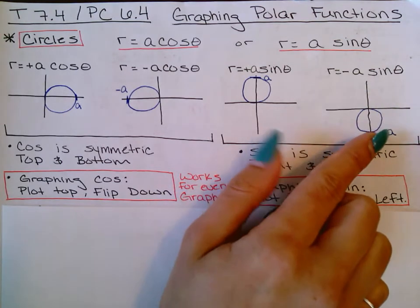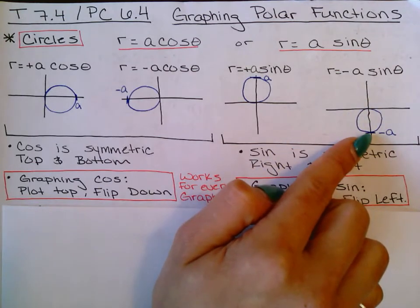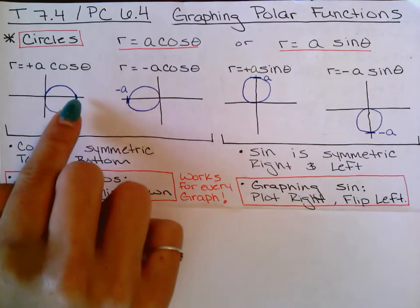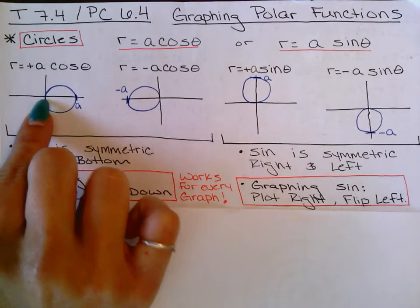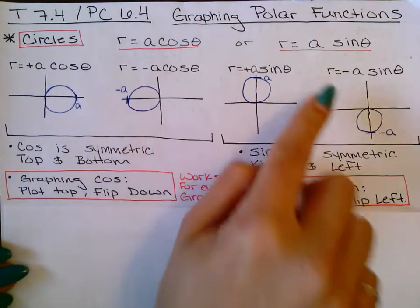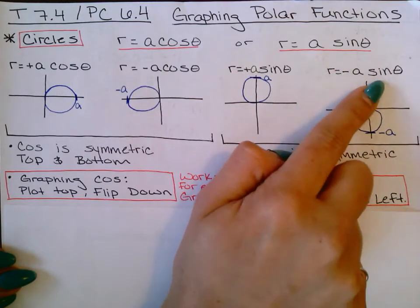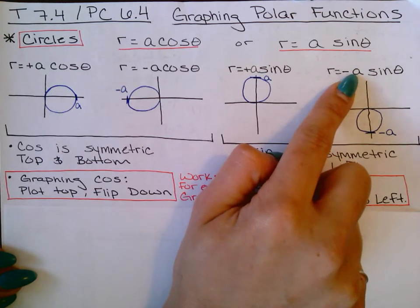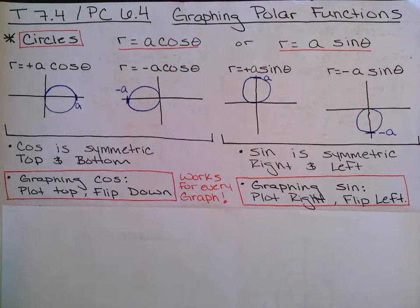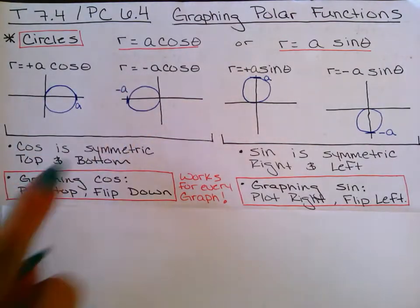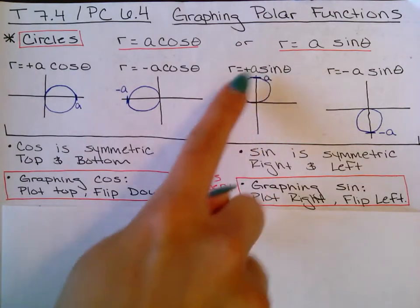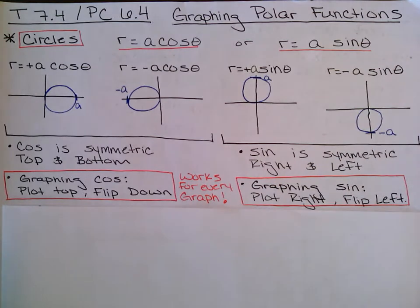If you have a negative sine it will be either majority or all on the bottom. For example, if I have positive 6 cosine, this will be a circle on the right-hand side stemming from the origin out going up to 6. If I have negative 2 sine, it will be majority — in this case because it's a circle — from the origin to the bottom, going down to negative 2. So no matter what shape: positive cosine is majority or all on the right, negative cosine majority or all on the left, positive sine majority or all on top, negative sine majority or all on the bottom.